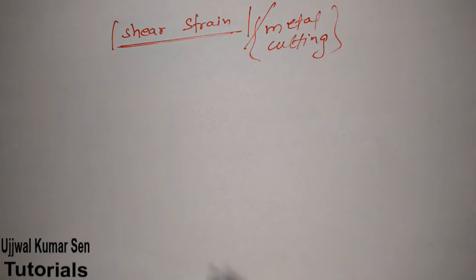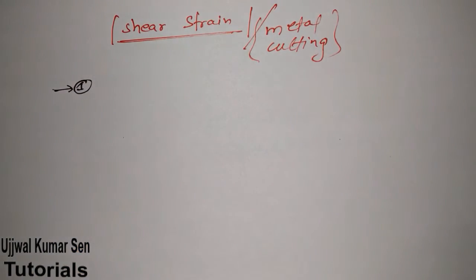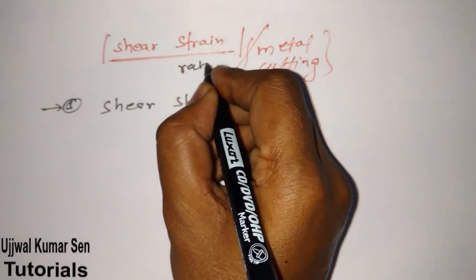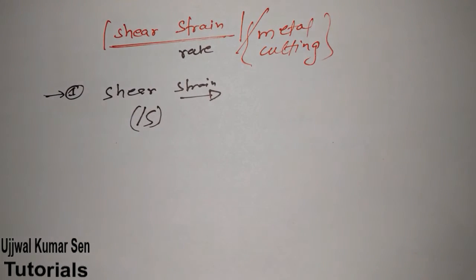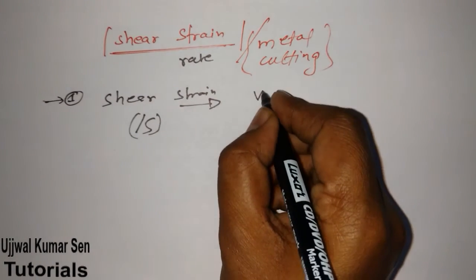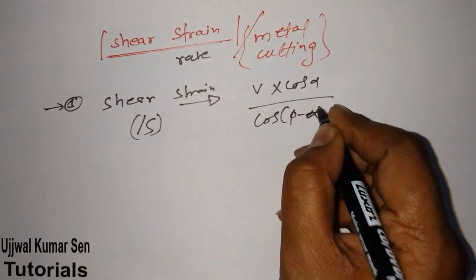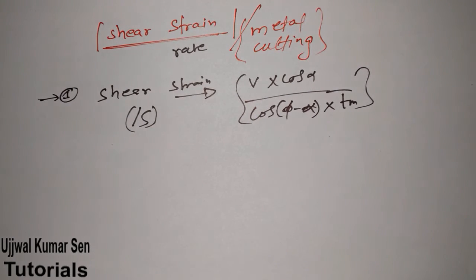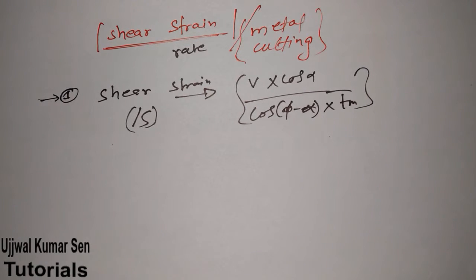First, let's go over the formulas required to solve the problem. The first formula is for shear strain rate — its unit is per second. The formula is: shear strain rate = v·cos α / cos(φ - α)·tm, where v is the cutting velocity or cutting speed, alpha is the rake angle, phi is the shear plane angle, and tm is the mean thickness.